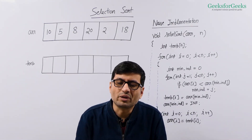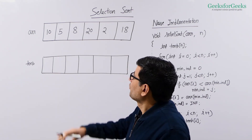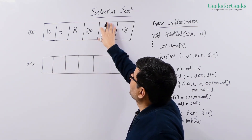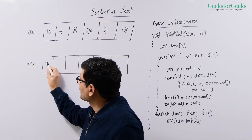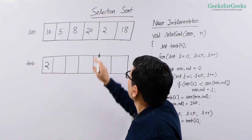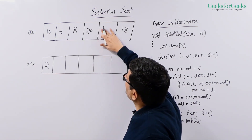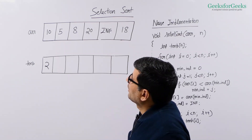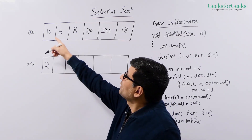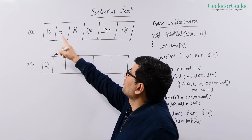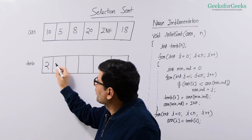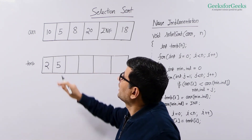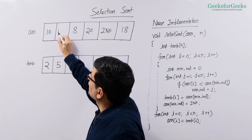Let us see the naive implementation. We first traverse the input array, find out the minimum element, and put it at the first position in our temporary array. We replace this element with infinity. Now we traverse through the input array again, find out the minimum element again, and put it at the next position in the temporary array. We replace this element with infinity.